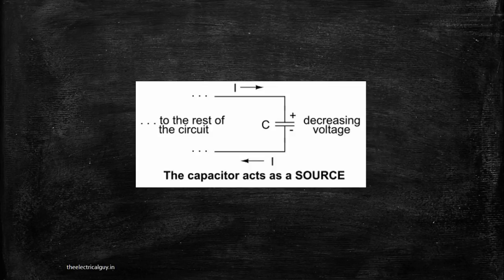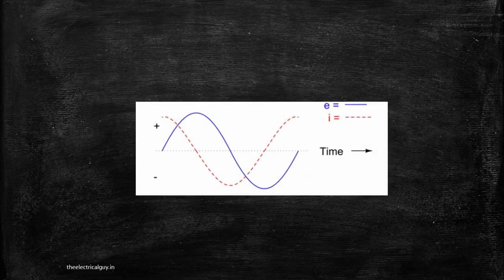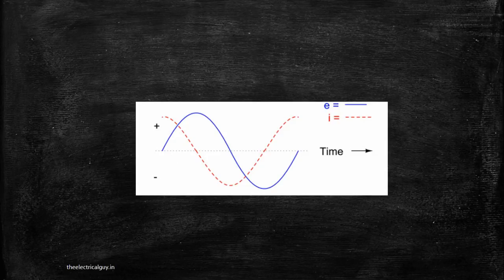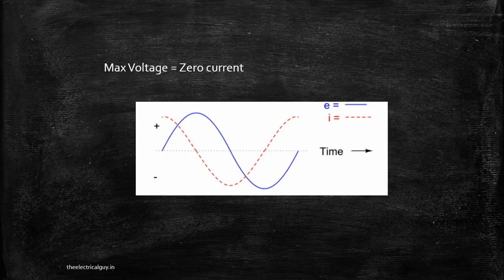Now the remaining question is: why do we always get a leading current from a capacitor? This is the typical waveform through a capacitor. Here you can see that the current is leading the voltage by 90 degrees. Why does this happen? If the voltage across the capacitor is at its maximum, the current will be zero.